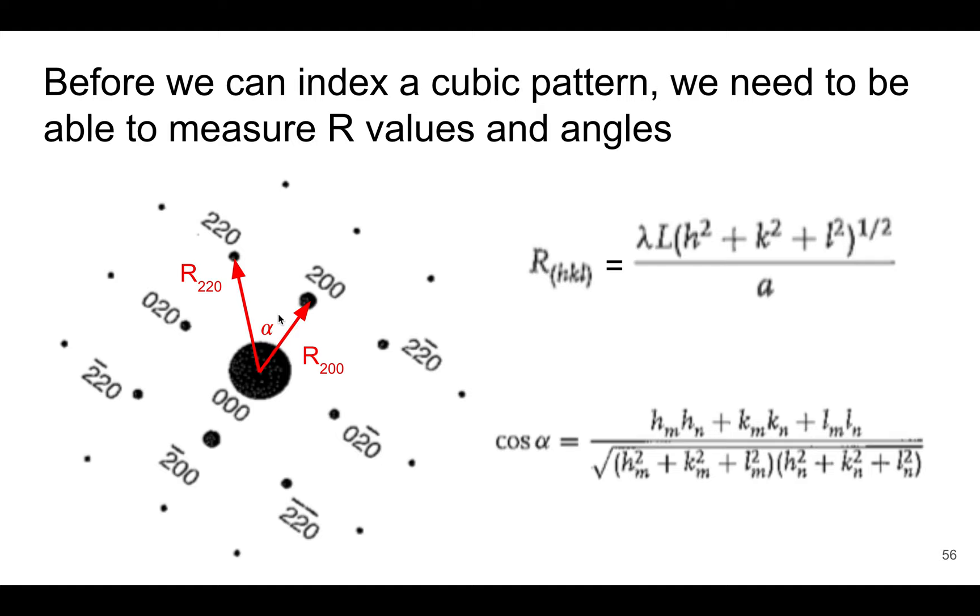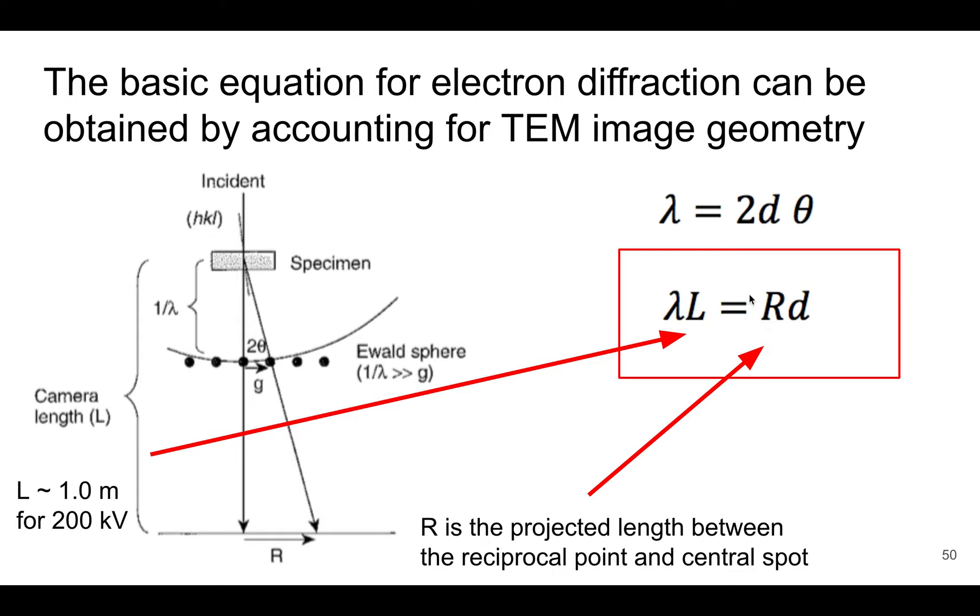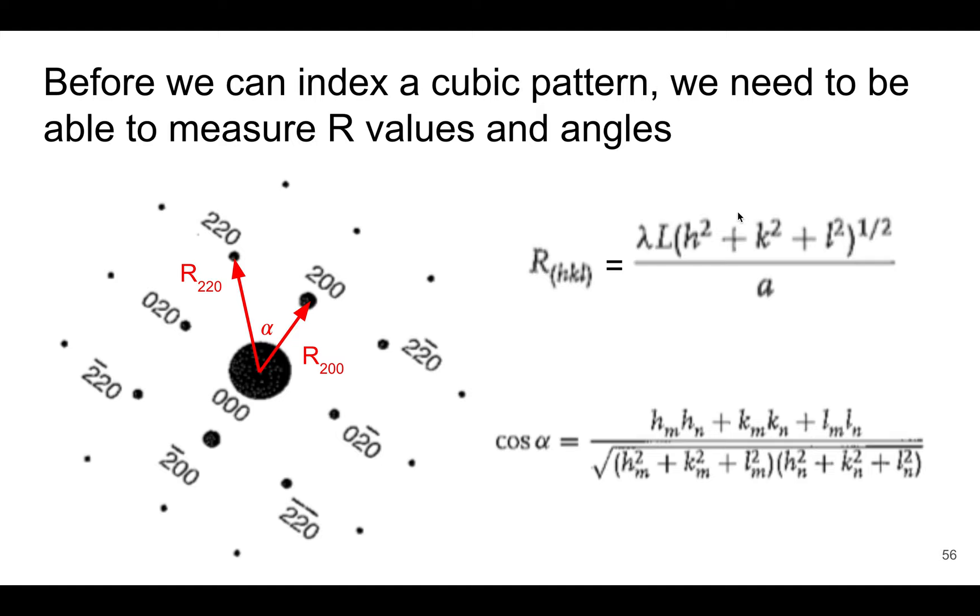If we take that interplanar spacing and combine it with the expression we had in XRD relating the lattice parameter to the interplanar spacing for cubic systems, we'll get this equation. This incorporates Bragg's law for TEM, combined with the lattice parameter expression for cubic systems. Once we measure the R value, then we can discern hkl values based on that.